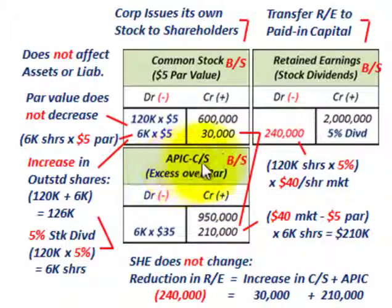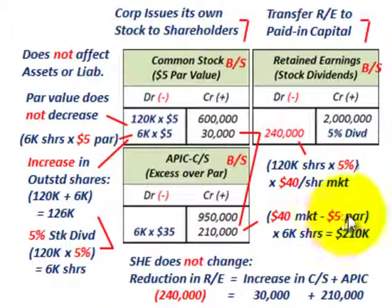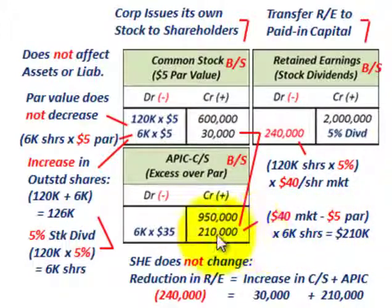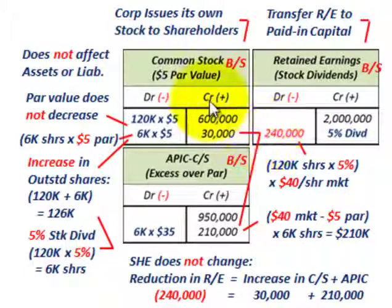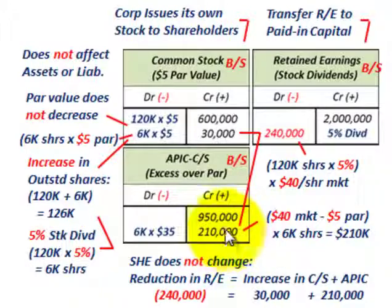The remainder goes into additional paid-in capital for common stock: $210,000 credit. That's based on the market price less the $5 par value, times those 6,000 shares — equaling $210,000. So we debited retained earnings (earned capital) by $240,000: $30,000 went to common stock at par, and $210,000 went to additional paid-in capital for the excess over par.